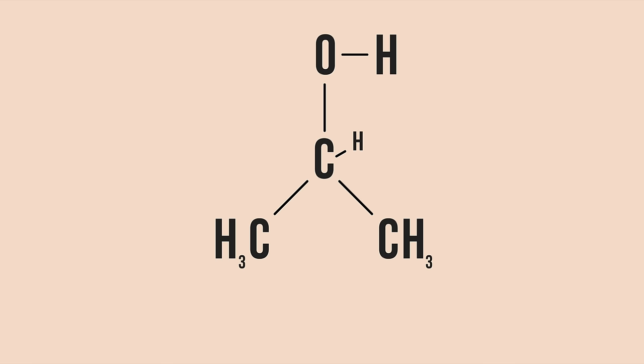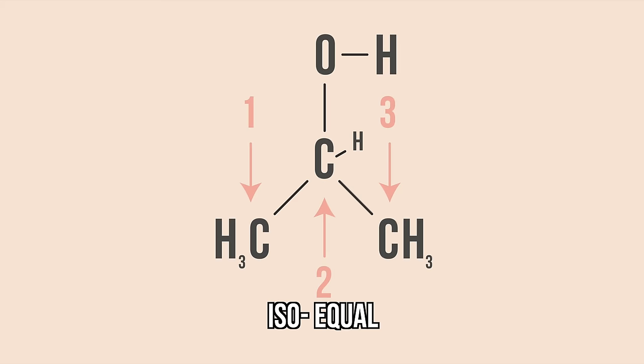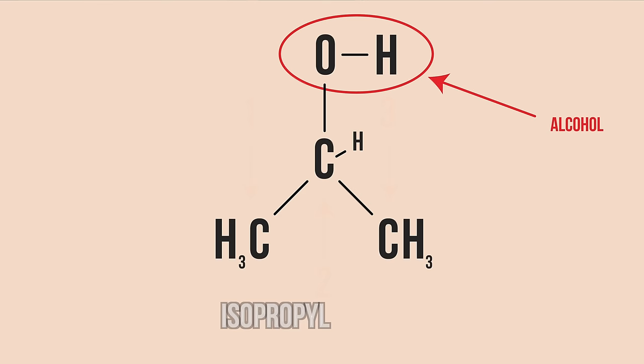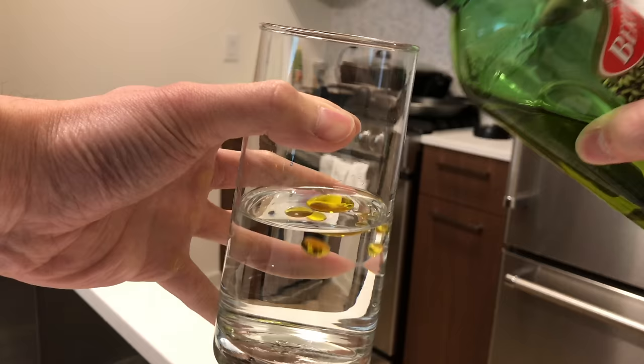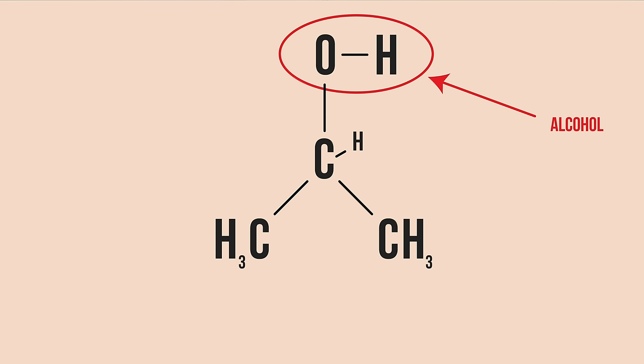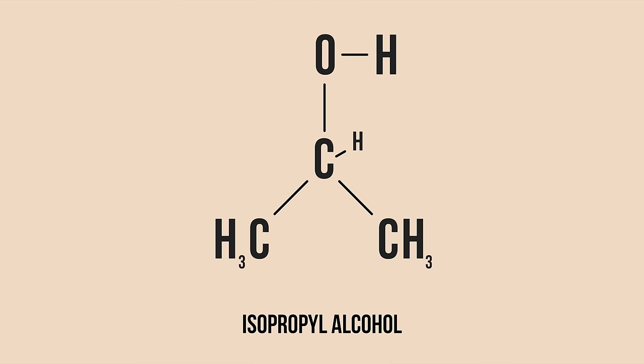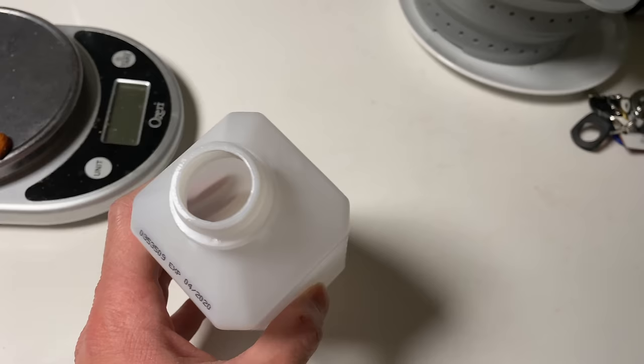Rubbing alcohol's real name is isopropyl alcohol. Iso meaning equal, propan is a prefix denoting the quantity of three and referring to the number of carbons, and alcohol meaning a chemical moiety of one oxygen bound to one hydrogen. Long chains of carbon are oil. Oil doesn't mix with water at all, but alcohol groups interact with water because water is also made of hydrogen and oxygen. Both the name isopropyl alcohol and its structure tell us everything we need to know about what's happening to CB.